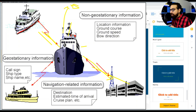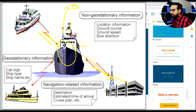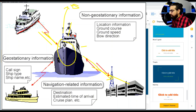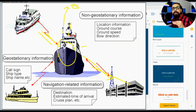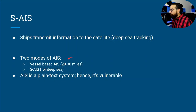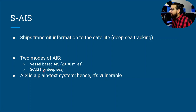When the AIS system installed in a ship transmits to a satellite, it becomes S-AIS. If you are far from the coastline — out in the deep sea — you cannot directly reach the shore station, so you send details to the satellite instead. There are two modes: vessel-based AIS for ship-to-ship and ship-to-shore within 20–30 miles, and S-AIS for deep-sea communication via satellite.